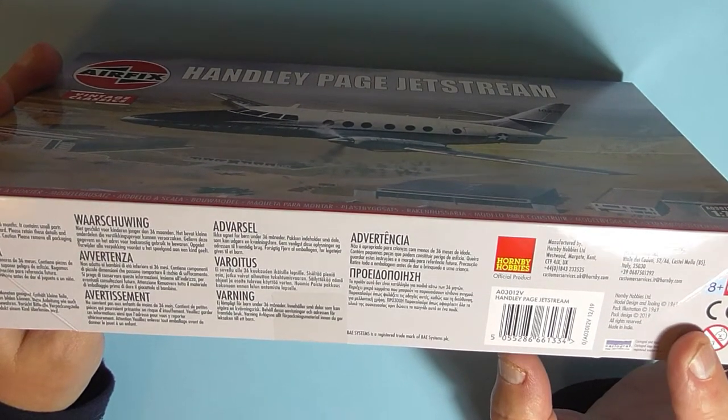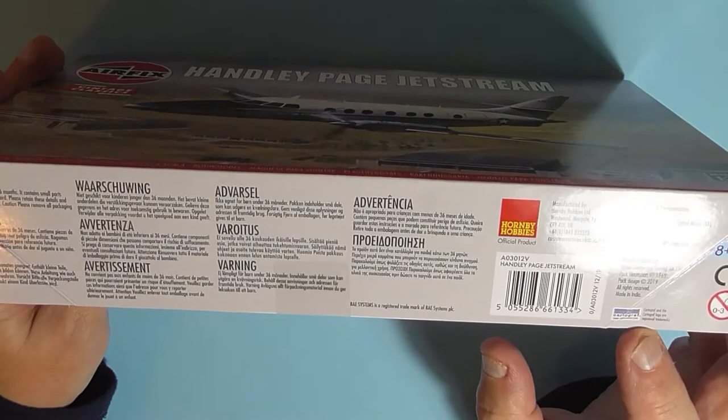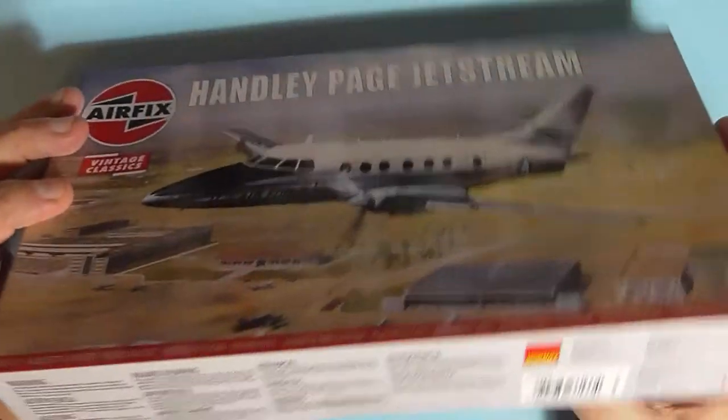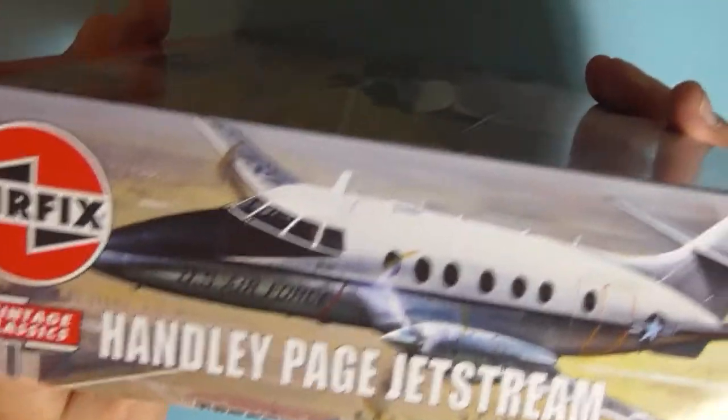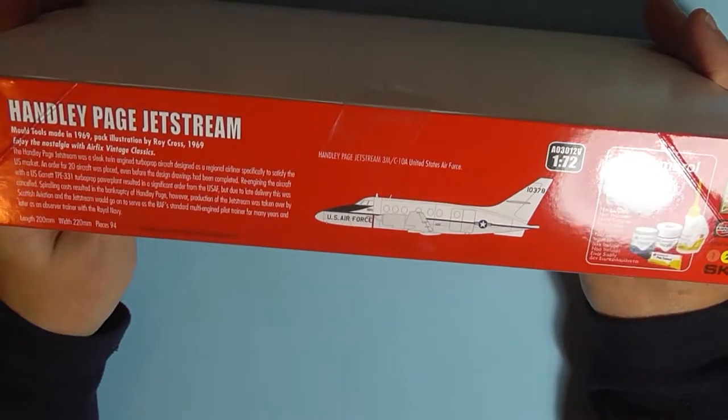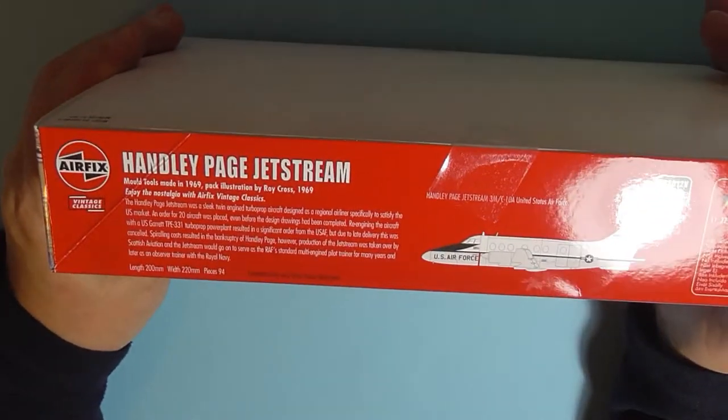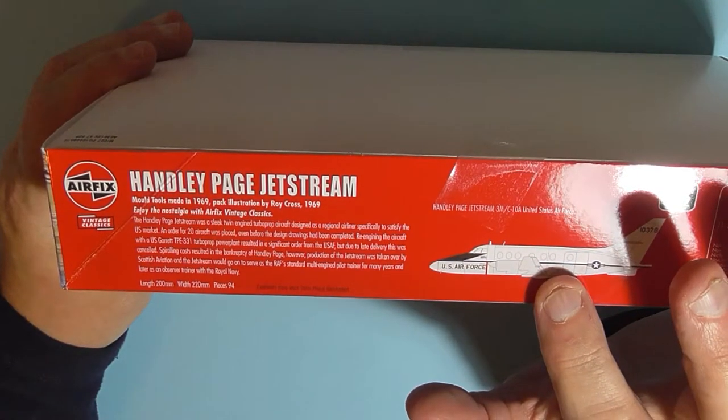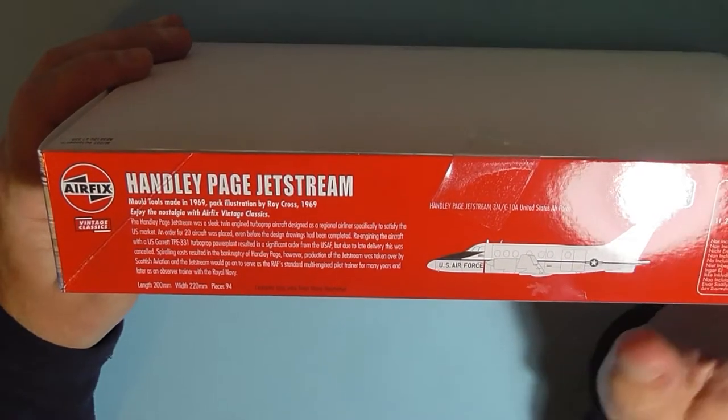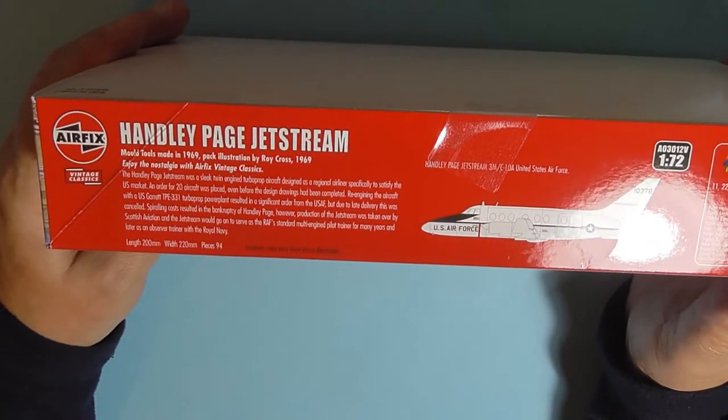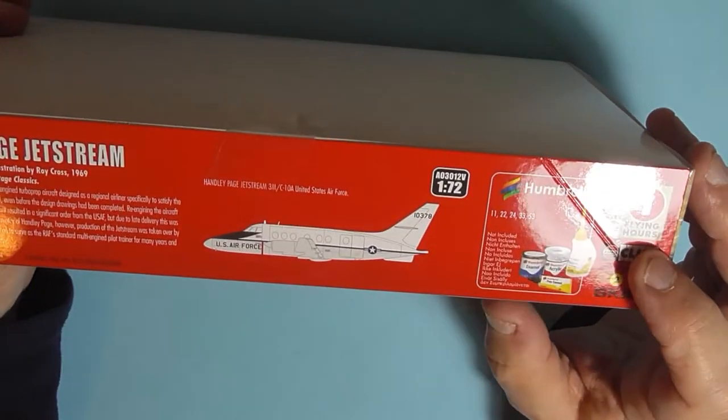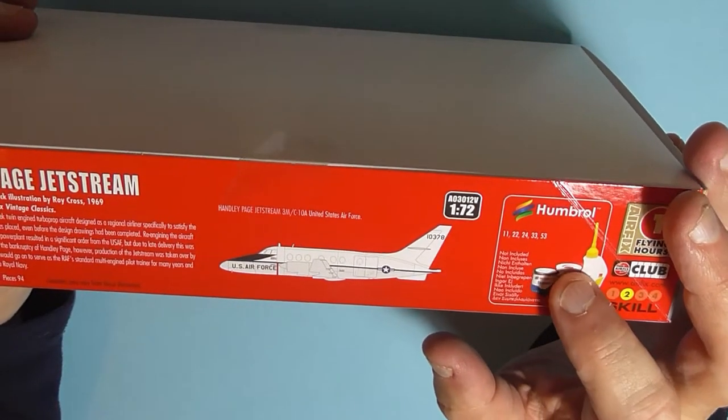This was made in 2019 in India and their Cartograph transfers. On the box you get the same on the side. There's only one marking in this kit which is from the United States Air Force. Apparently there's 94 pieces in it. You get one flying error and it tells you which colour paints you need, not many.